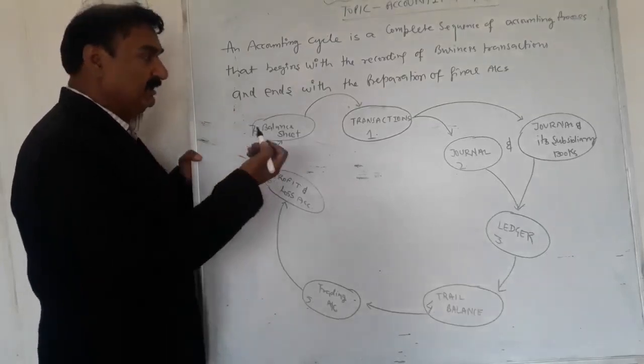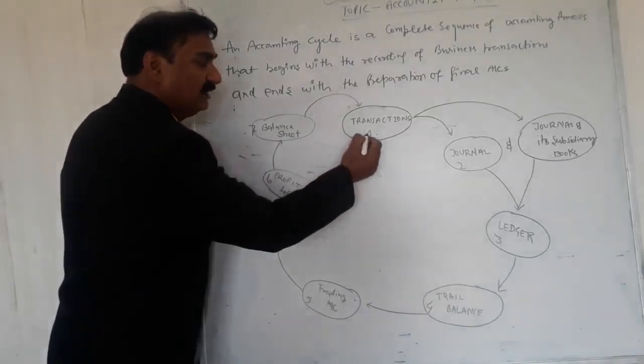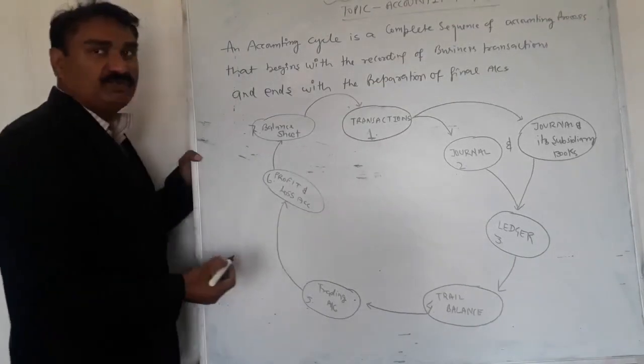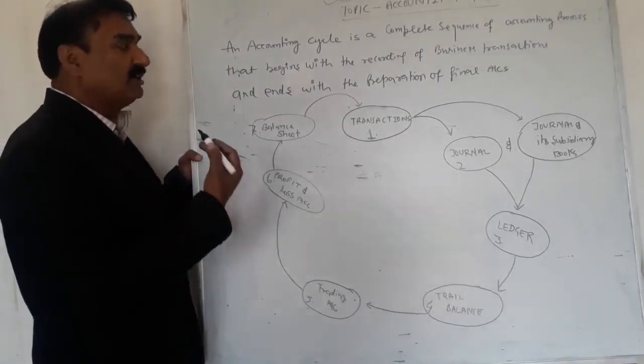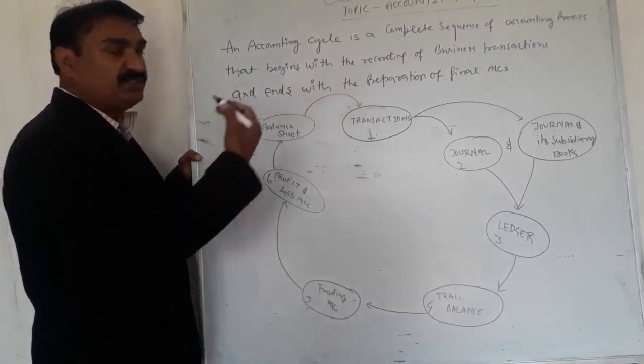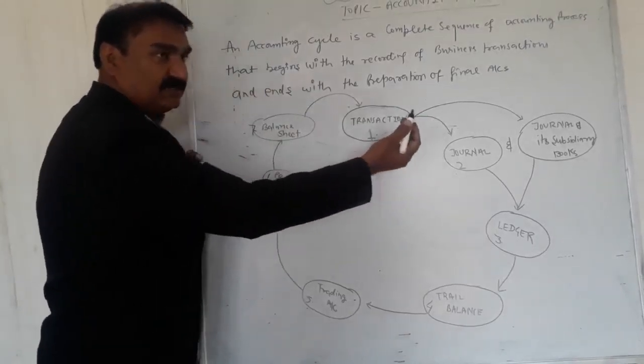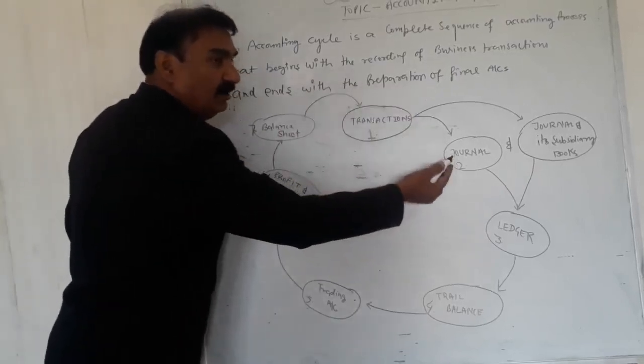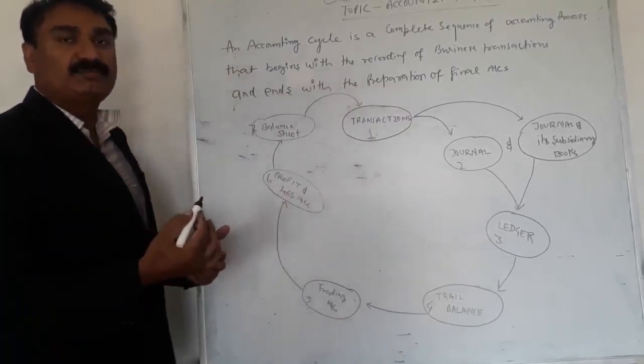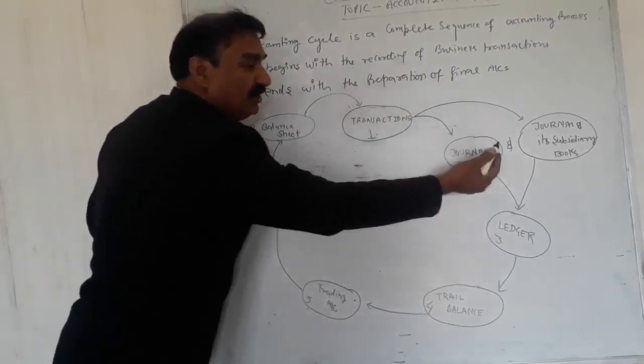It starts with the transaction, step number one. All the financial transactions are recorded in journal and its subsidiary books. Even if the transaction is small we record in journal. When business is large and the transactions are more, we record in journal and its subsidiary books. These books are cash book, purchase book, sale book, etc.